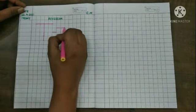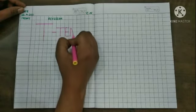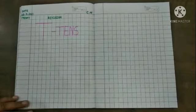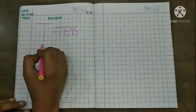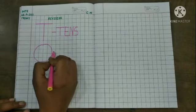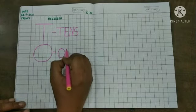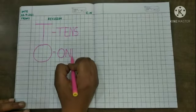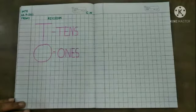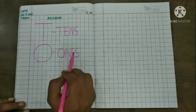Now, T for tens, T-E-N-S, tens. O is for ones, O-N-E-S, ones. T stands for tens and O stands for ones.